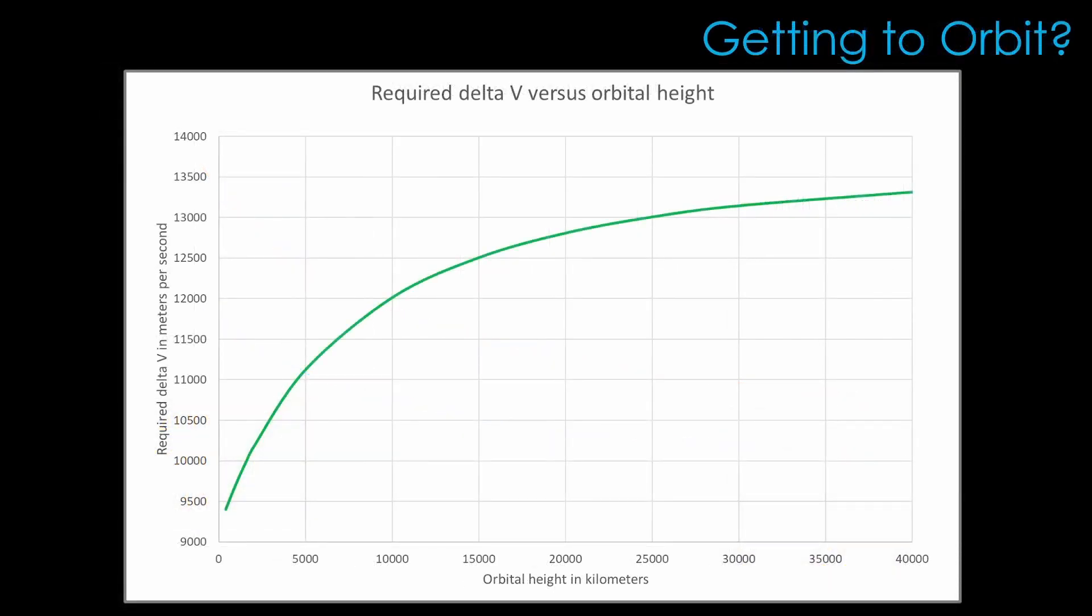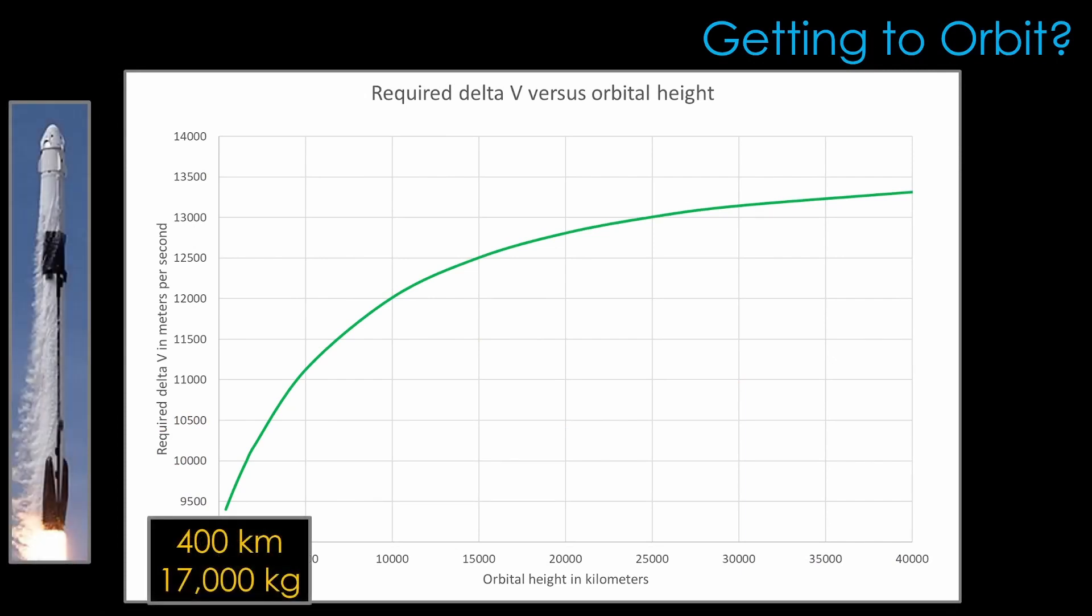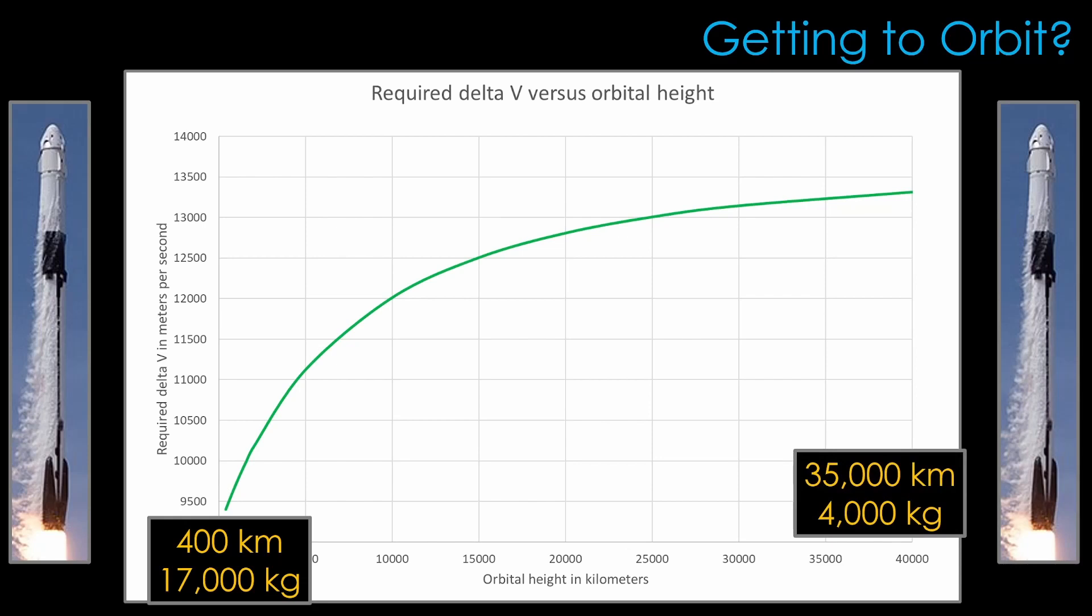This graph demonstrates how difficult it is to get into various orbits. Getting into a 400 kilometer orbit takes about 9,400 meters per second of what is called delta V, the amount of work the rocket has to do. The Falcon 9 can carry around 17,000 kilograms in reusable mode to 400 kilometers. Getting into higher orbits is much, much harder. Getting to 35,000 kilometers takes over 13,000 meters per second of delta V, and that limits Falcon 9 to perhaps 4,000 kilograms for that orbit.